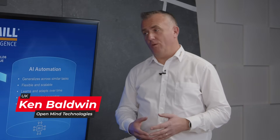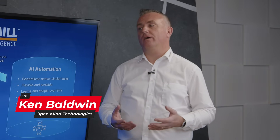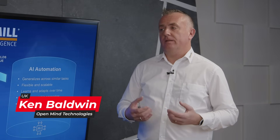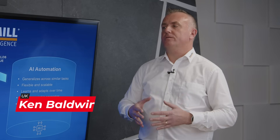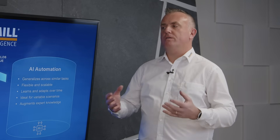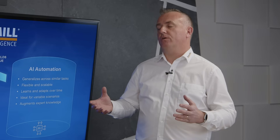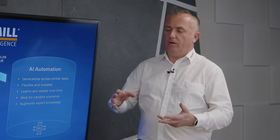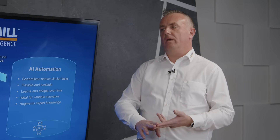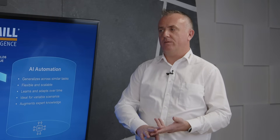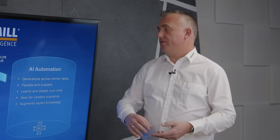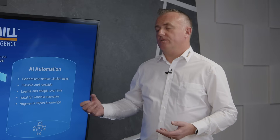A lot of people have been asking what we're doing with AI at OpenMind, and I think it's really important to separate this into two sides. We've called this HyperMill Intelligence because there's rule-based automation — which in our opinion is not AI, although we could label it AI — and then there's actual AI automation. They are two different things. Rule-based automation is about precision, exact mathematical calculations, whereas real AI is deep learning.